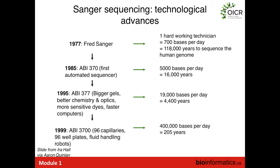This sequencer was used as a workhorse for the Human Genome Project. Rather than having one sequencer run for 200 years, many genome centers bought tens to hundreds of these sequencers, ran them around the clock, and were able to sequence the human genome over a span of about 10 to 15 years.